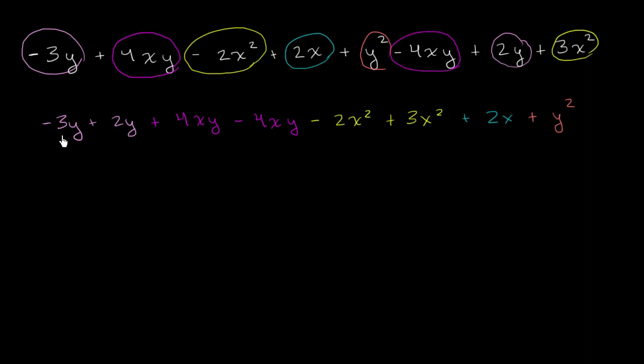If I have negative 3 of something plus 2 of that something, what do I have? If I have 2 of something and subtract 3 of that, I'm left with negative 1 of that something. So I could write negative 1y, or just negative y. Another way to think about it: what's the coefficient here? It's negative 3. And here? It's 2.